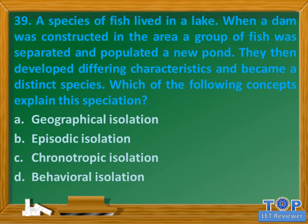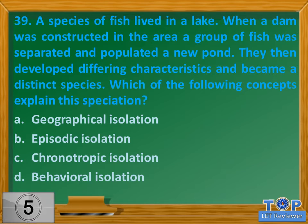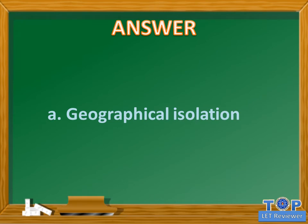Question number 39. A species of fish lived in a lake. When a dam was constructed in the area, a group of fish was separated and populated a new pond. They then developed differing characteristics and became a distinct species. Which of the following concepts explains this speciation? A. Geographical isolation. B. Episodic isolation. C. Chronotropic isolation. D. Behavioral isolation. Answer: A. Geographical isolation.